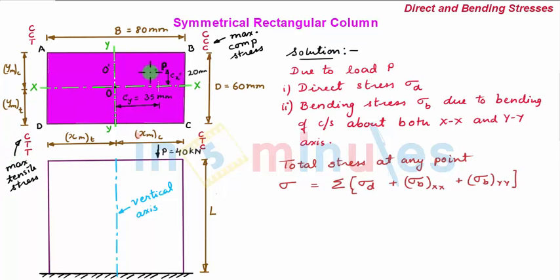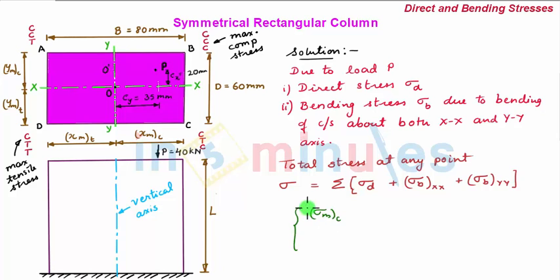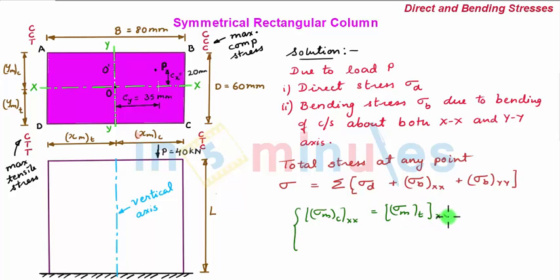When the cross-section bends about xx-axis, since the section is symmetrical about xx-axis, ymax in compression equals ymax in tension. Hence sigma_max in compression about xx-axis equals sigma_max in tension about xx-axis.